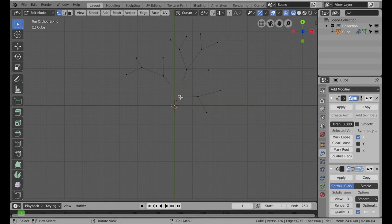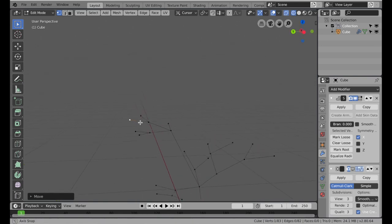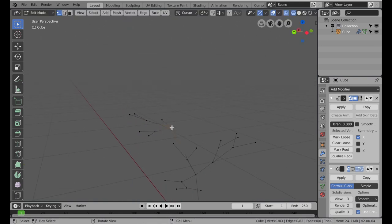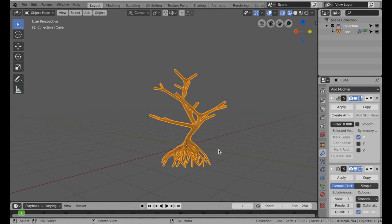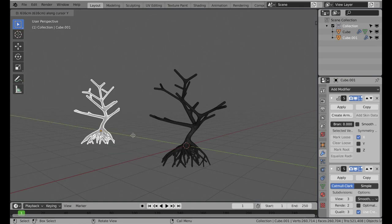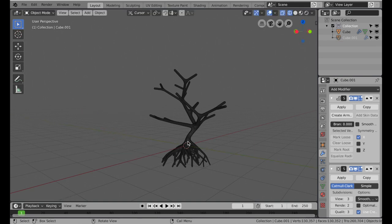The trunk and branches of the tree were created using the exact same process. When I was happy with the overall shape of the tree, I saved a copy, applied the modifiers, and opened sculpt mode.